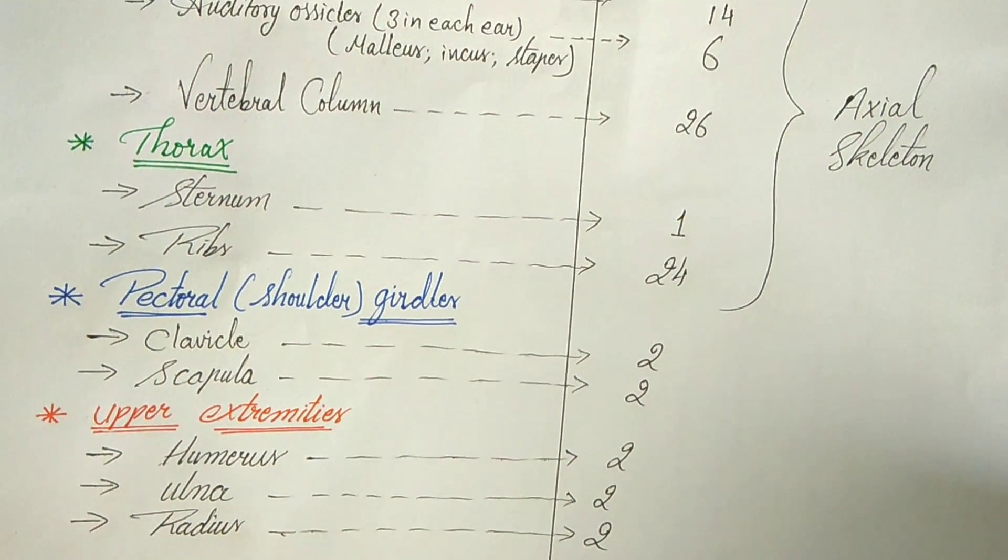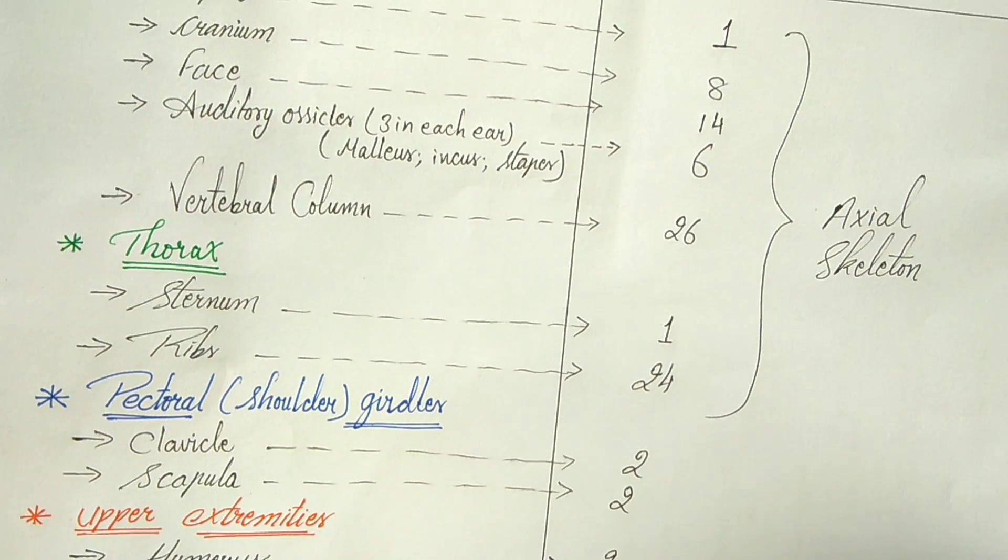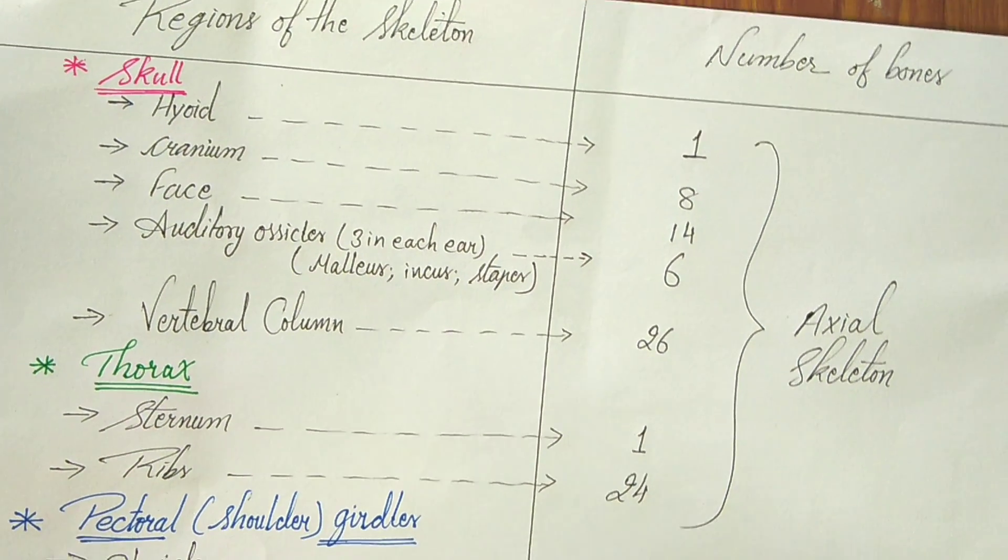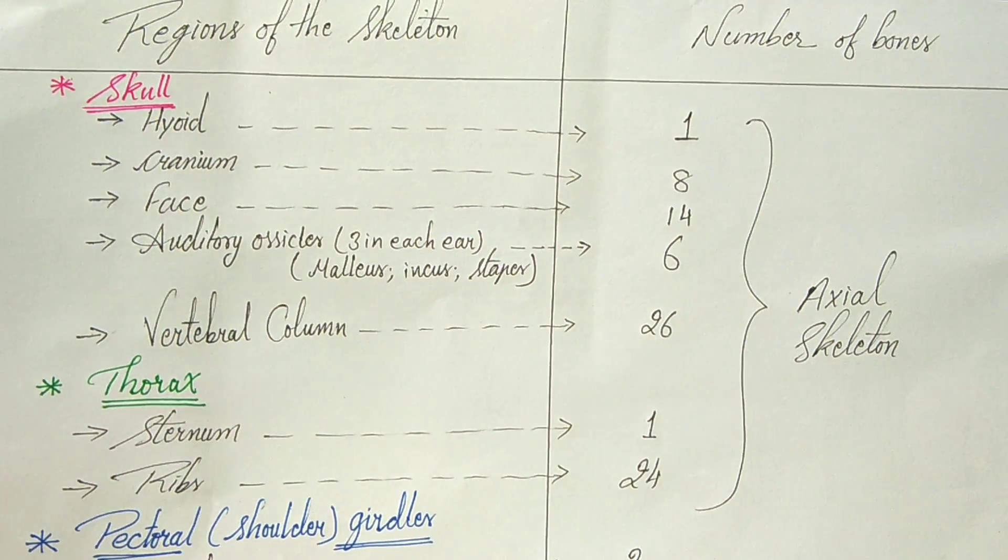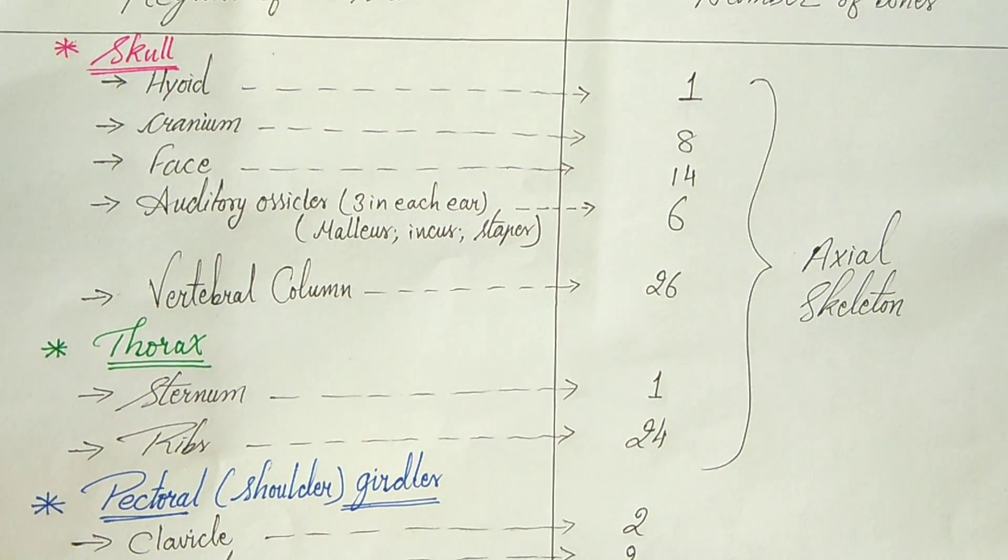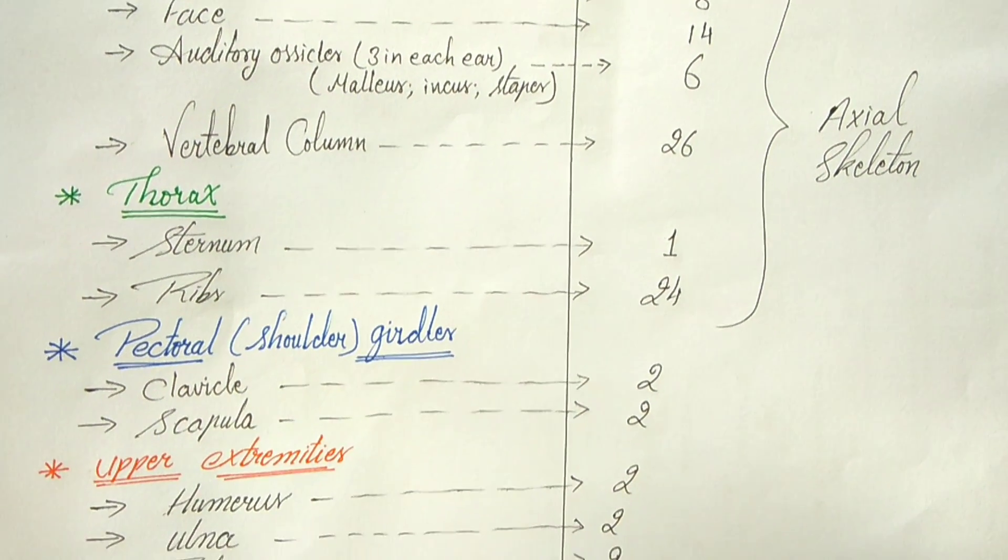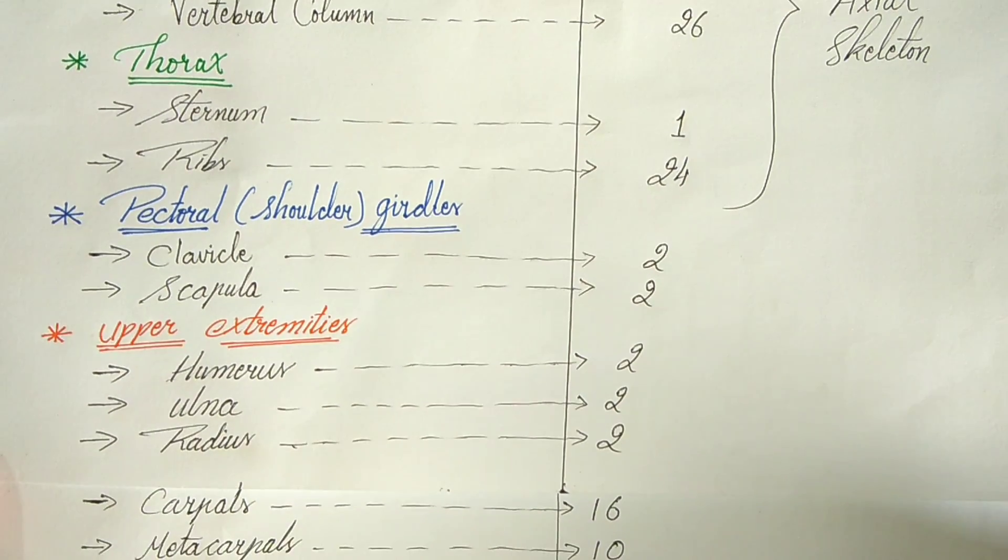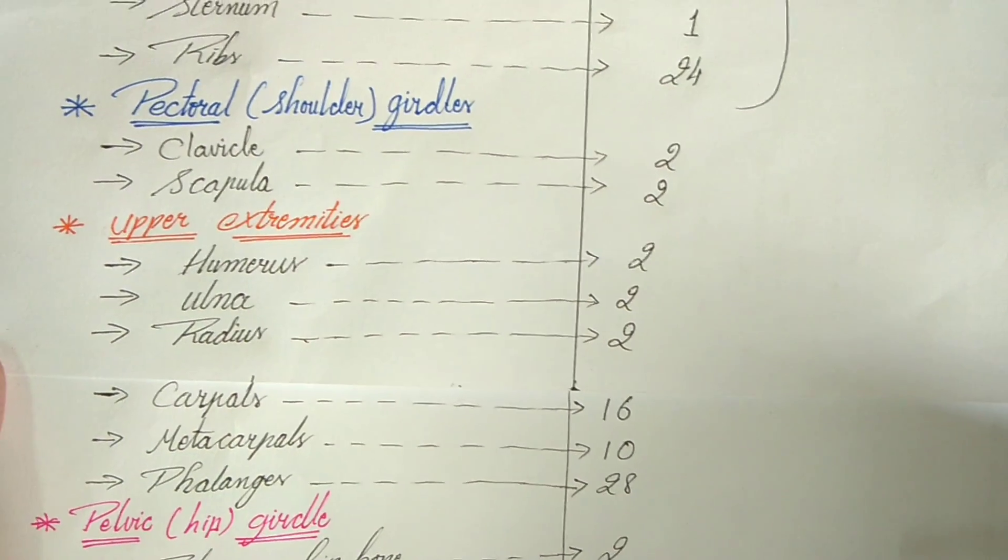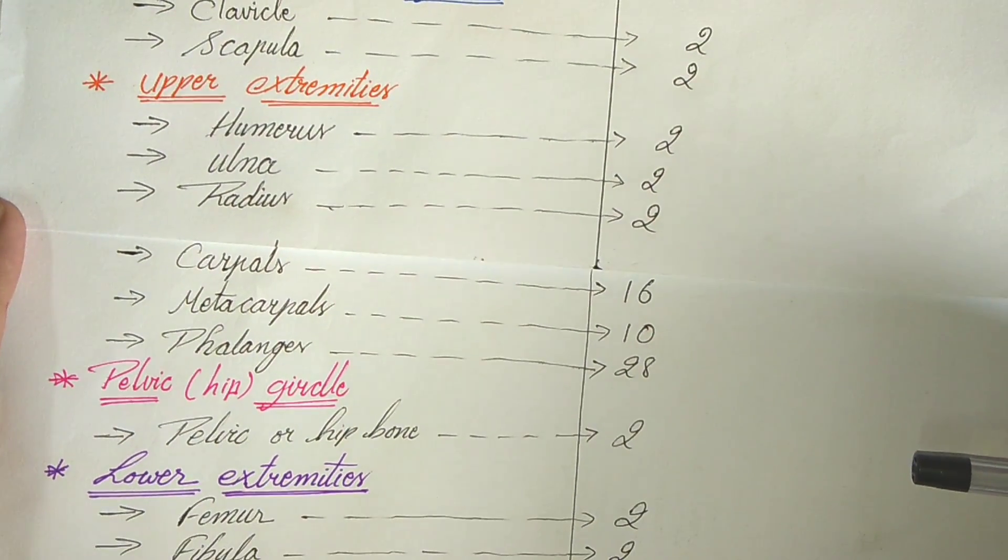Pectoral girdles, that is also known as shoulder girdles. Then thorax region, two bones are present. Then in skull region, all together known as axial skeleton.